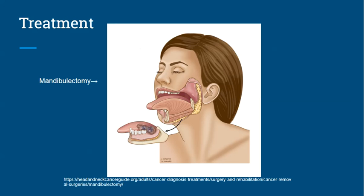While ameloblastoma can be a threatening condition, there are many treatment options available. The most common way of treating ameloblastoma is surgically removing the tumor. During surgery, the surgeon will remove the tumor along with some of the surrounding healthy tissue in order to prevent recurrence.